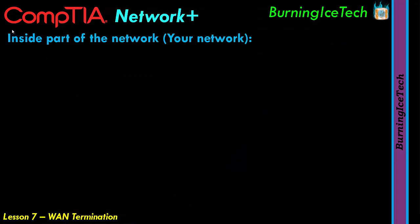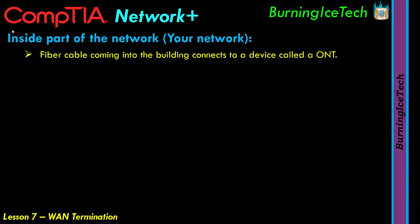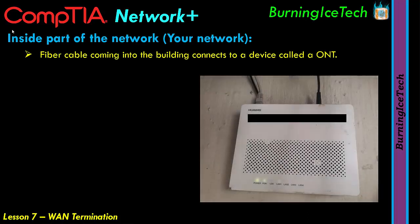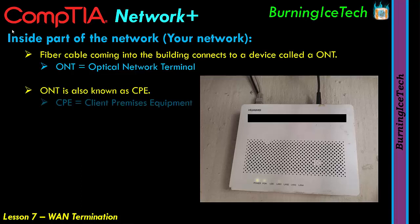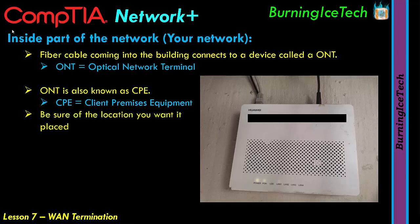On the inside of the building, the fiber cable normally connects to a little box called an ONT — short for Optical Network Terminal. This device is also known as CPE, which stands for Client Premises Equipment. The provider normally provides you with the ONT during installation. It's a good idea to decide beforehand where you want this device, because it can be very expensive to move it later. Once they fix it to the wall, it's not as simple as unplugging it and moving it like a router.